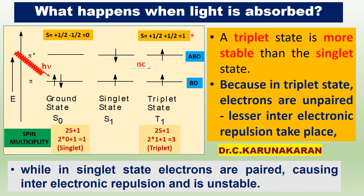What happens when light is absorbed by a molecule? For example, you can choose the ethylene molecule. The electrons in the molecule — there are two pi electrons. One bond means two electrons, so the pi bond.